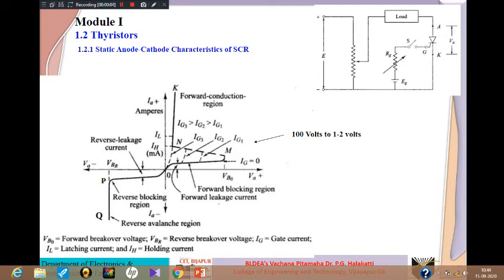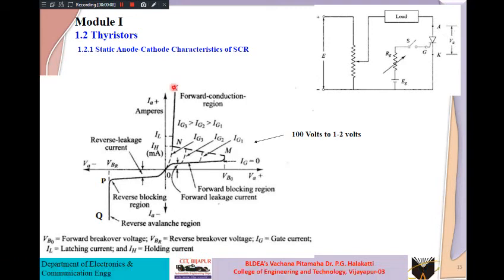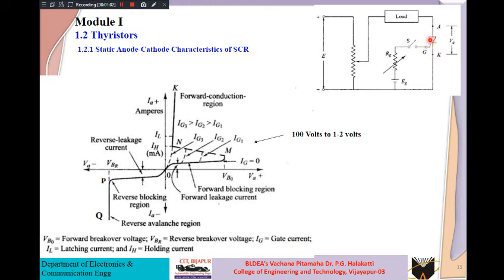Welcome to this video session on power electronics and instrumentation. In the last session, we started discussing thyristors. A thyristor is a combination of a thyrite element plus transistor. An important member of this family is the SCR, that is the silicon controlled rectifier. We covered its structure — four different layers PNPN having three junctions, with the anode at top and gate connected nearer to the cathode.